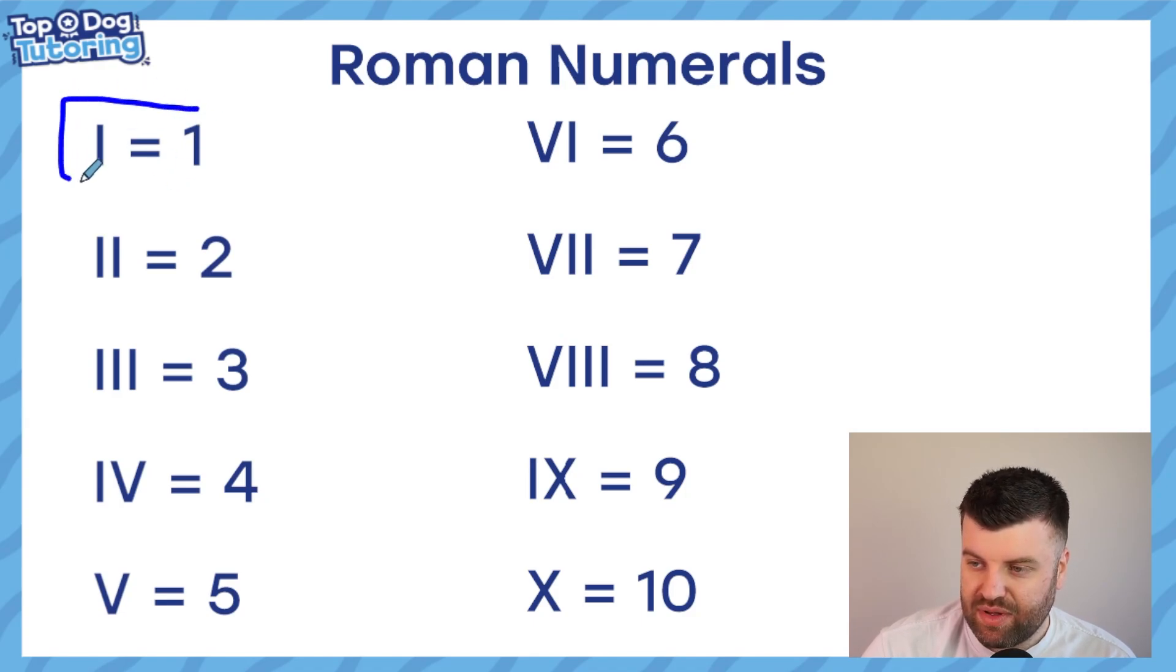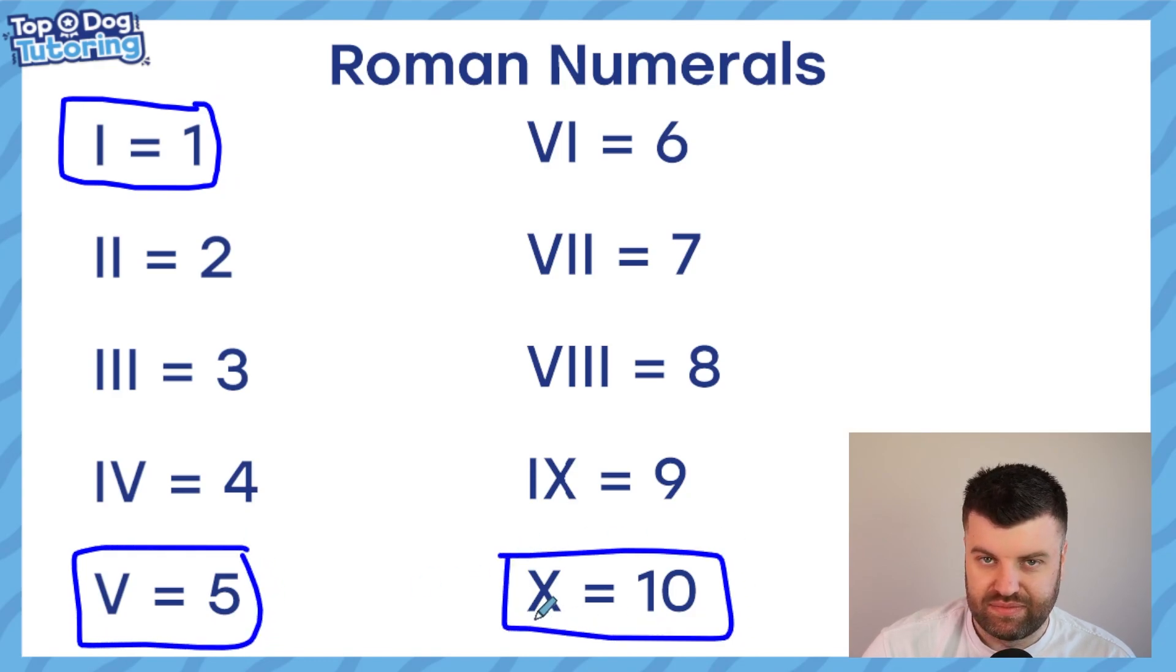So just to very quickly recap, we've gone up to 10 using three symbols. I, V, and X. And then we can use the rules around Roman numerals to work out what the rest might be.